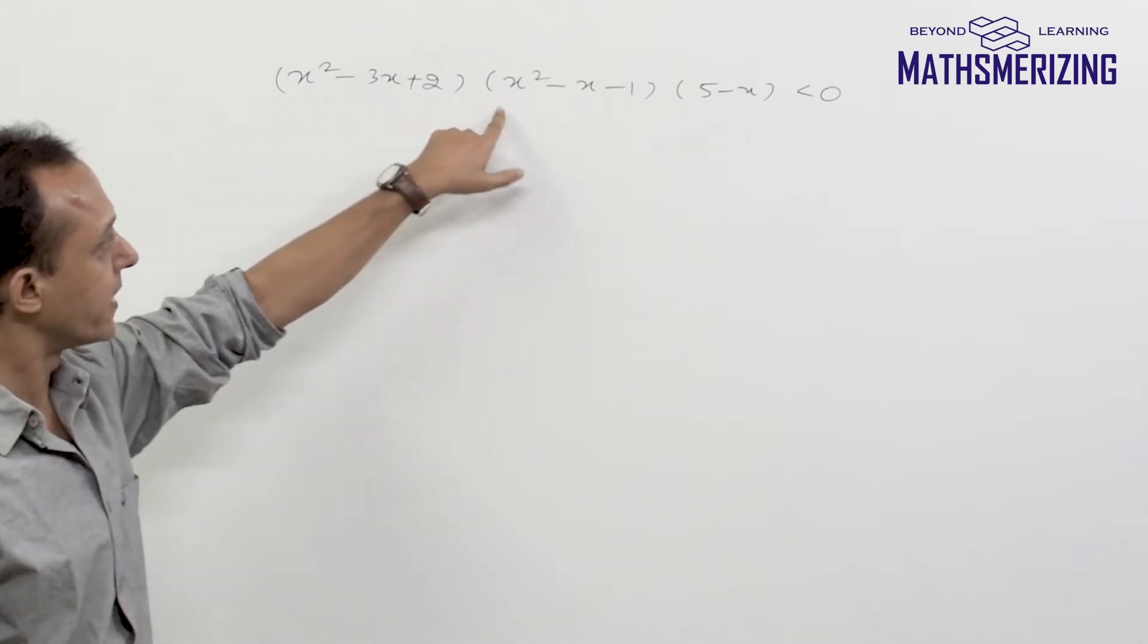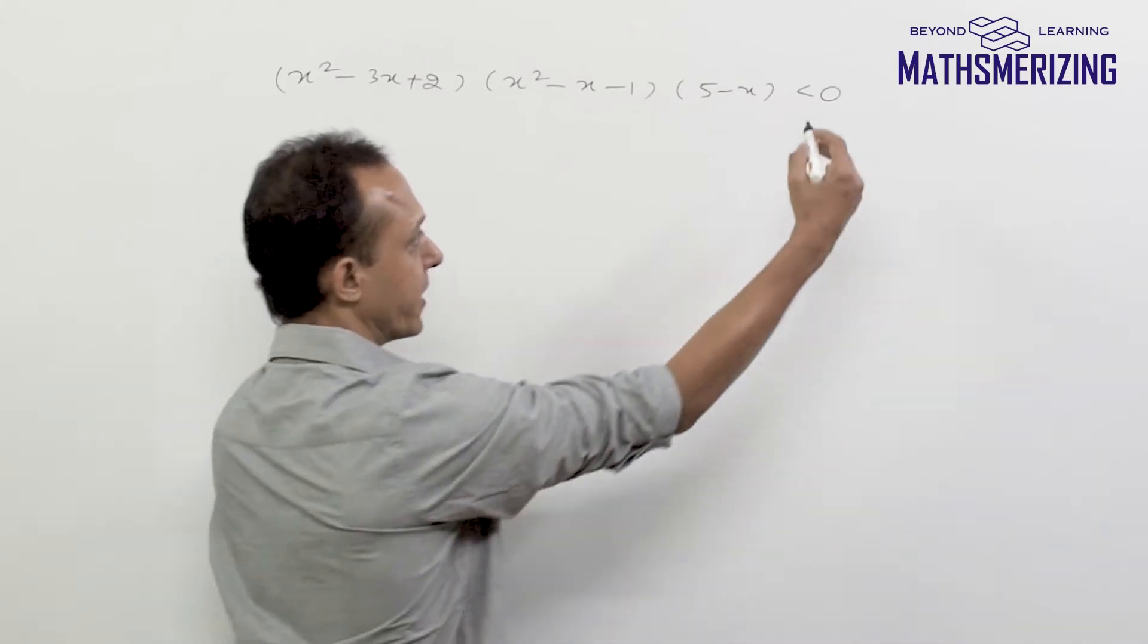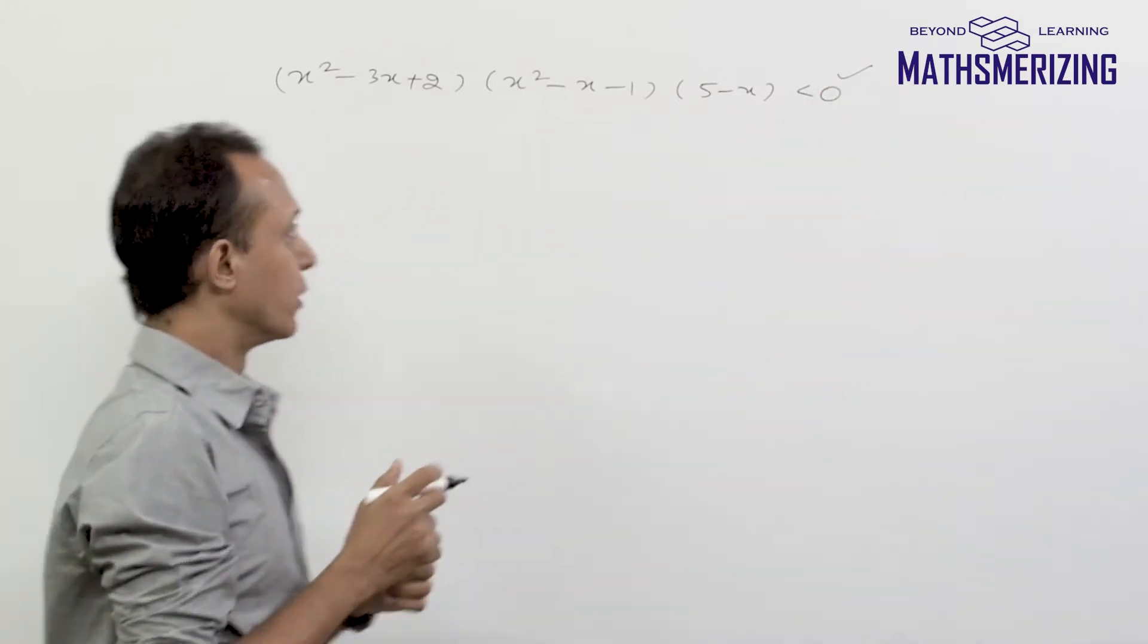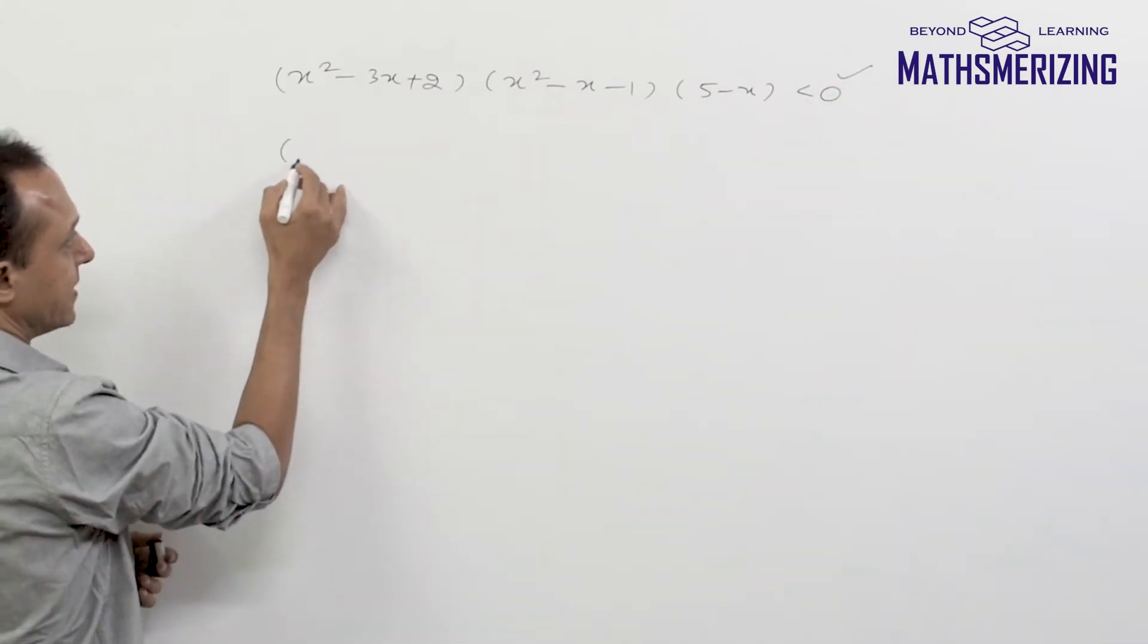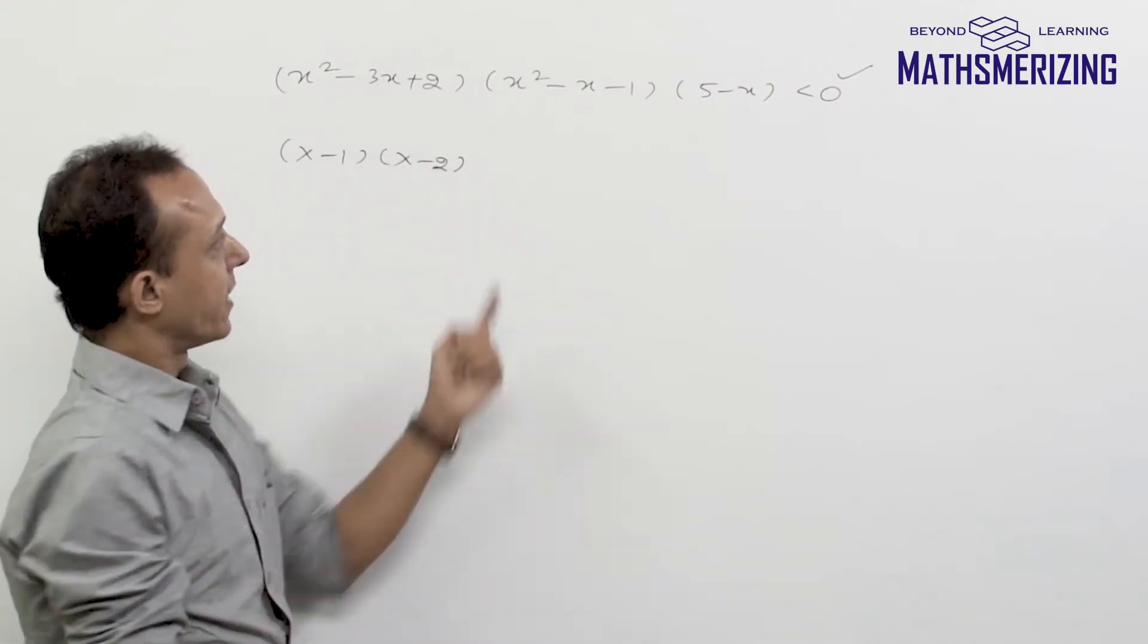x squared minus 3x plus 2, x squared minus x minus 1, 5 minus x is less than 0. It's already equal to 0, so I can factorize the first expression: x minus 1, x minus 2.